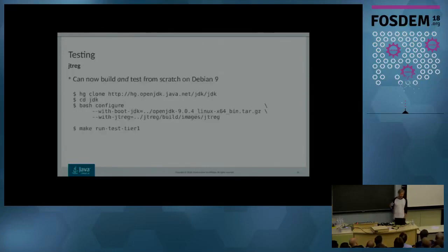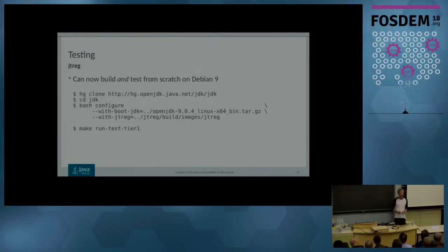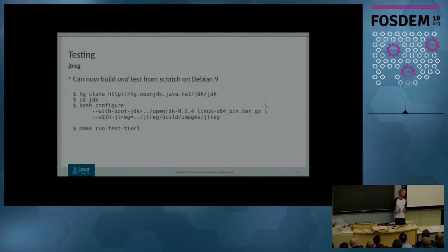So now, not only can you build OpenJDK from scratch on a fresh machine thanks to the GPL-licensed binaries, but thanks to the new build-all script for JTReg, you can actually build and run tests in very few commands. Get the source code with an HG clone, cd to the directory, configure passing the GPL-licensed OpenJDK binary as the boot JDK and your newly built JTReg image, then run make run-test-tier1. Not only will you get a proper OpenJDK image, but you will also have all tier 1 standard tests run on it, giving you some verification that things hold together.